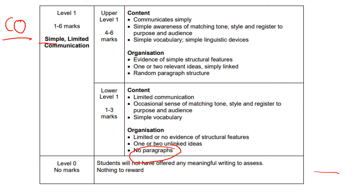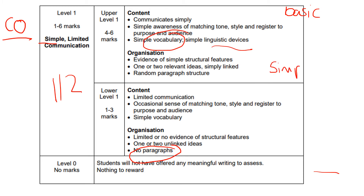At level one — roughly grades one and two — students have a really basic story or description with simple words, probably no real techniques, and very basic writing. For example: 'One day a man woke up. He got on the bus and he was very very sad.' Very few students are working at this level.